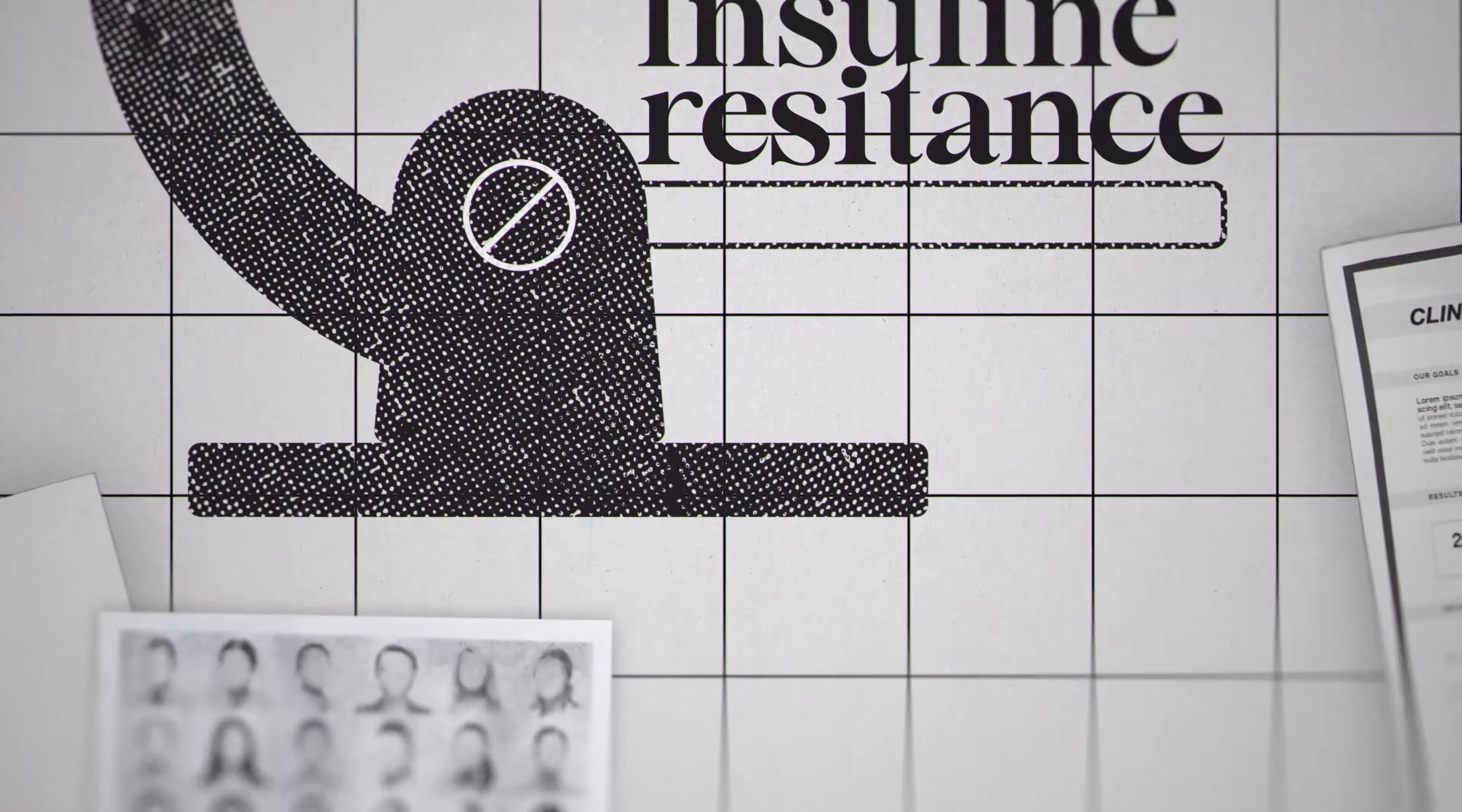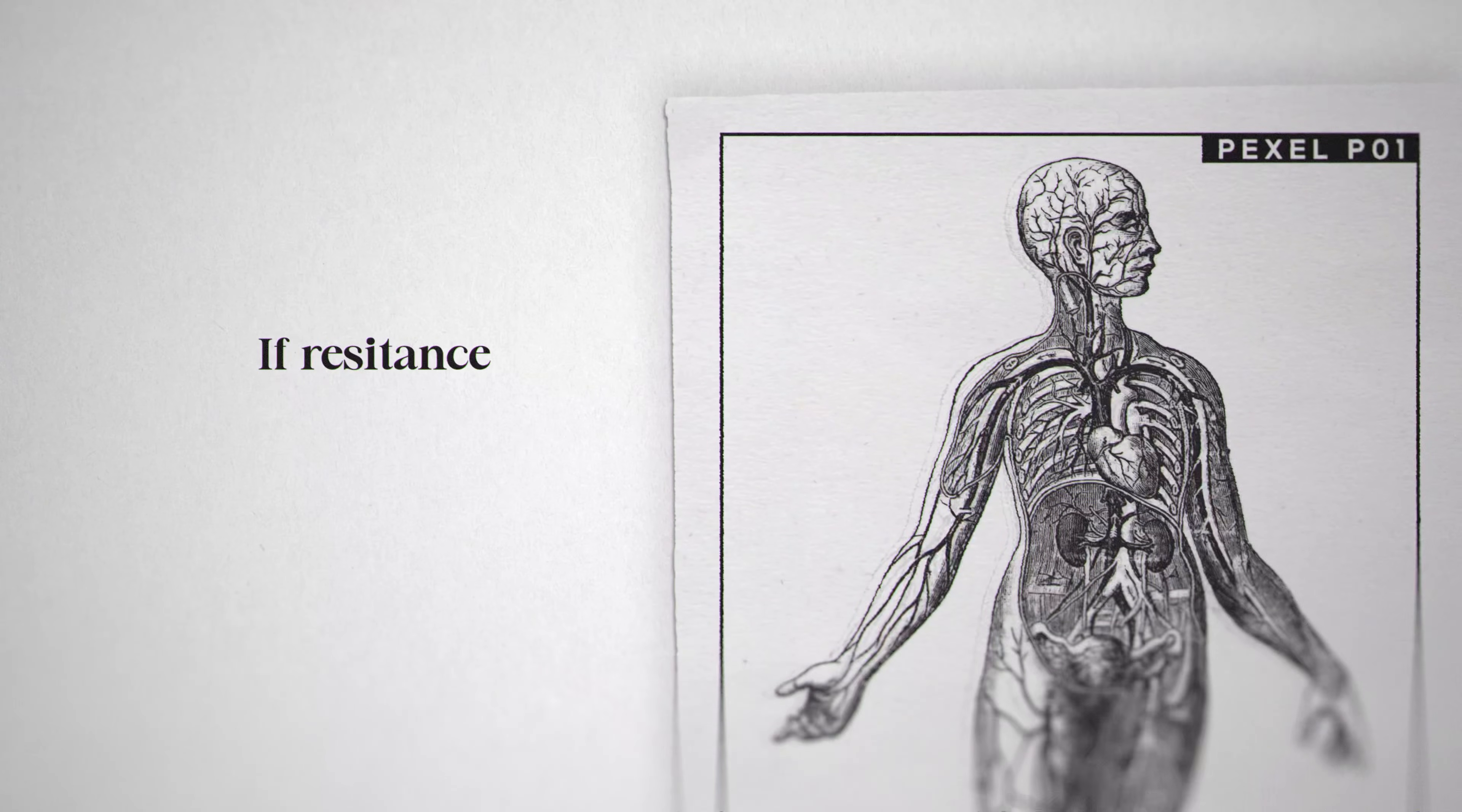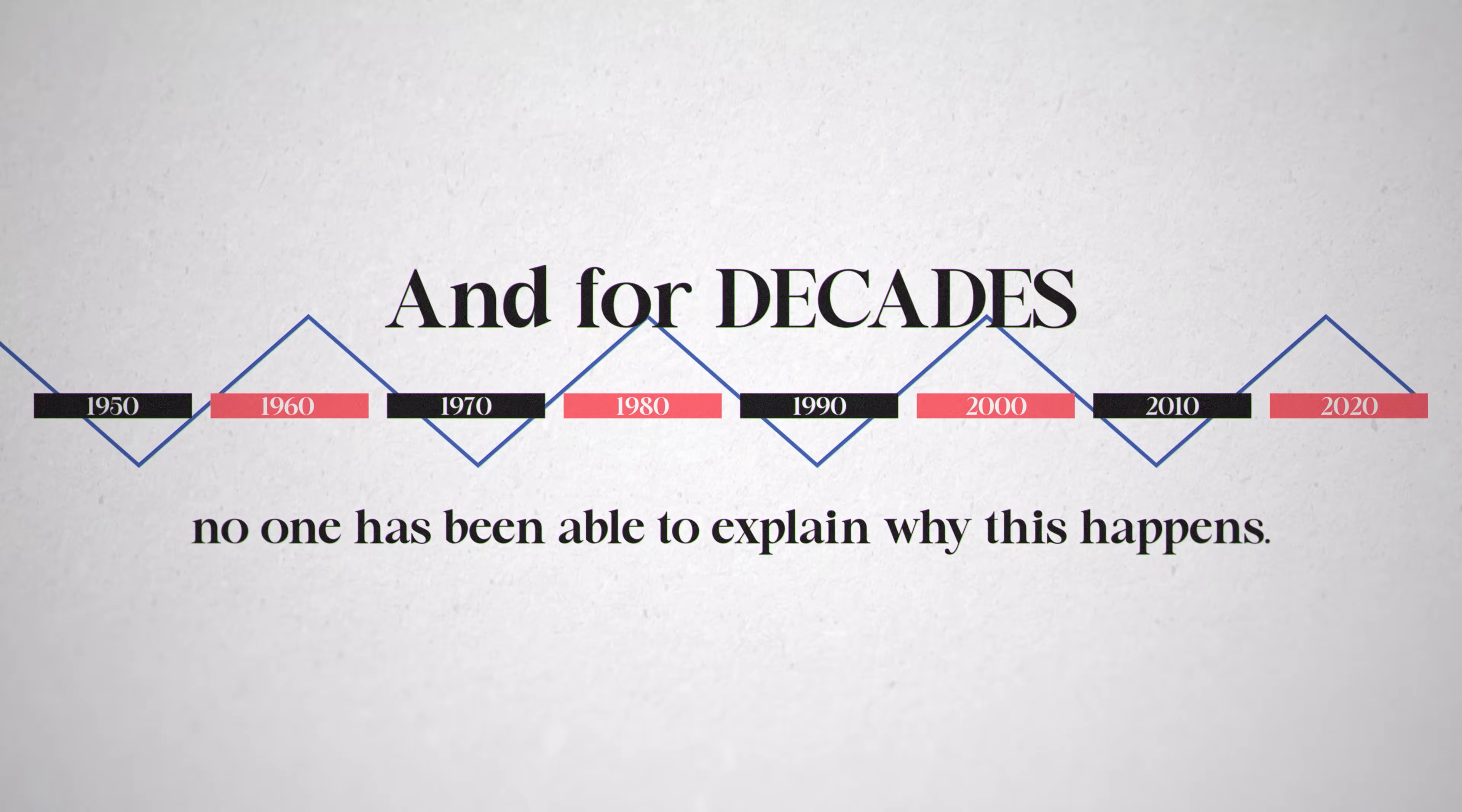If insulin resistance were real, why would it affect only three kinds of cells—muscle, liver, and fat—but not others like skin, bone, or brain cells? And if resistance were truly happening, what causes millions of cells to suddenly stop recognizing insulin, only to flip back after pregnancy or weight loss? The inconsistencies are striking, and for decades no one has been able to explain why this happens.